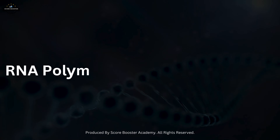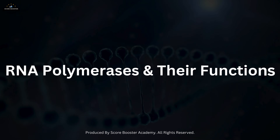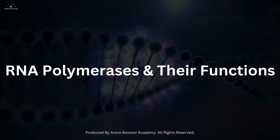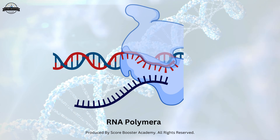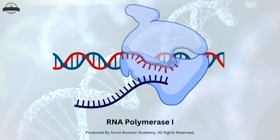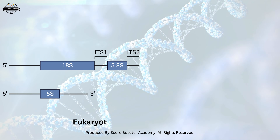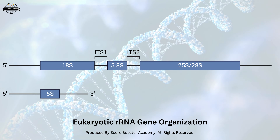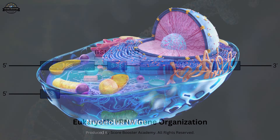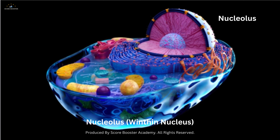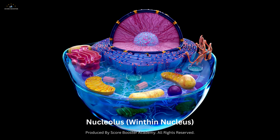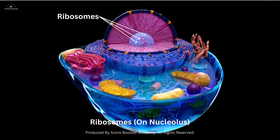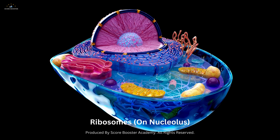RNA polymerase 1 is responsible for transcribing ribosomal RNA genes, which are essential components of ribosomes. In eukaryotes, the rRNA genes are organized in tandem repeats within the nucleolus, a specialized region of the nucleus. The transcripts produced by RNA polymerase 1 are processed and assembled into ribosomes, which are the cellular machinery for protein synthesis.